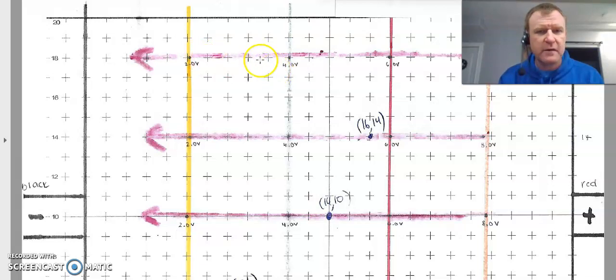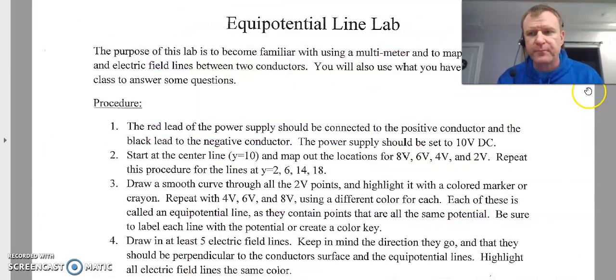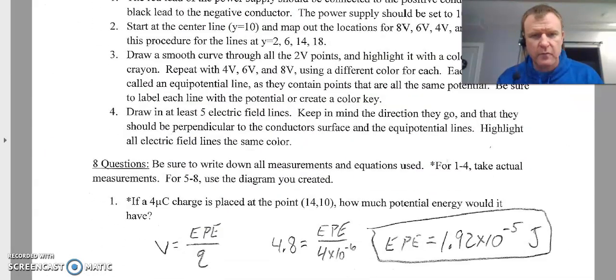The one thing I will say is when drawing in the electric field lines, they should start on the positive and end on the negative. So I'd like to see it extended all the way from positive to negative. We remember the field lines do go from the positive side to the negative. That's something important to recognize. So let's go through the lab.